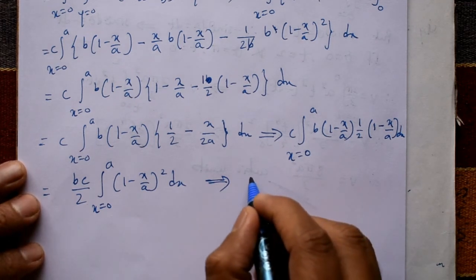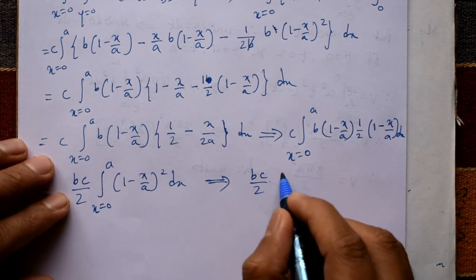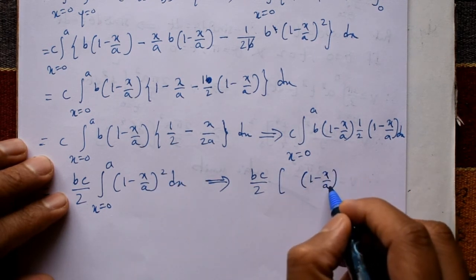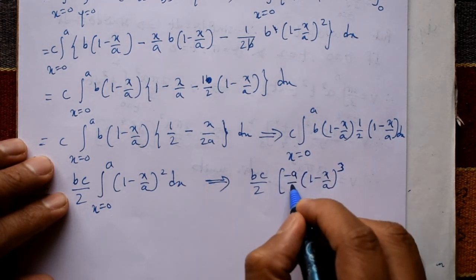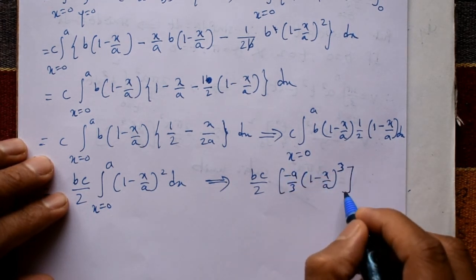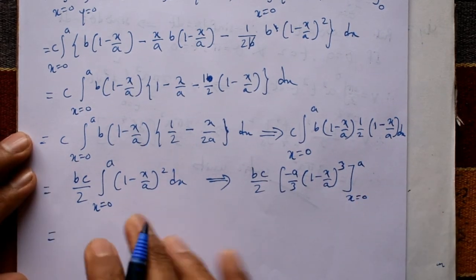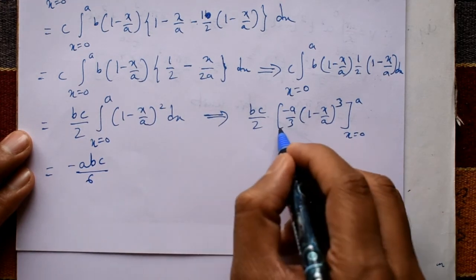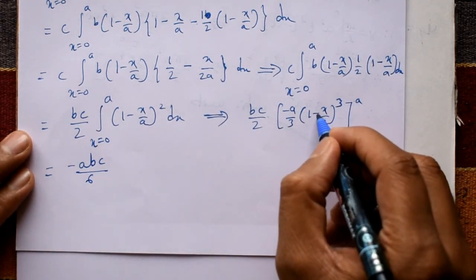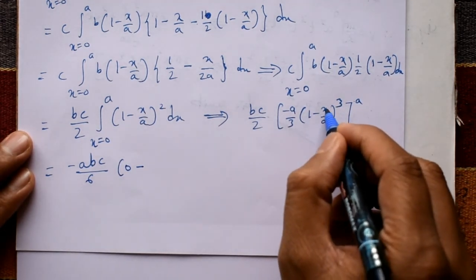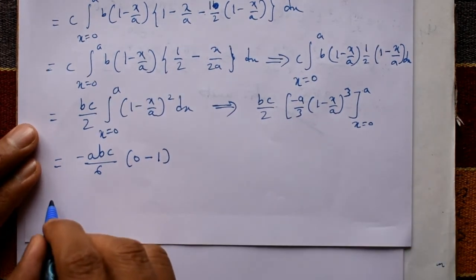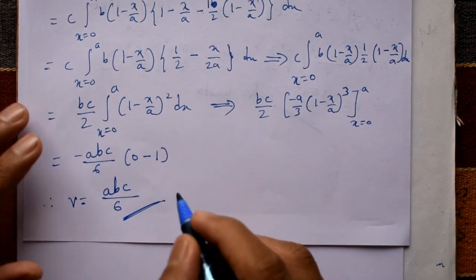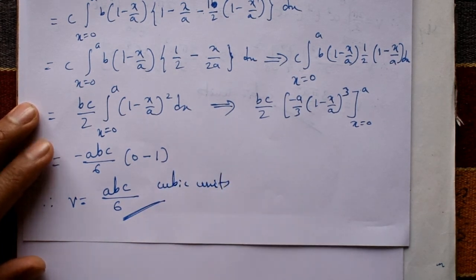Integrating (1 - x/a)² with respect to x: we get (1 - x/a)³ · (-a/3), evaluated from 0 to a. This equals (-abc/6)[(1 - 1)³ - (1 - 0)³] = (-abc/6)[0 - 1] = abc/6. Therefore V = abc/6 cubic units.